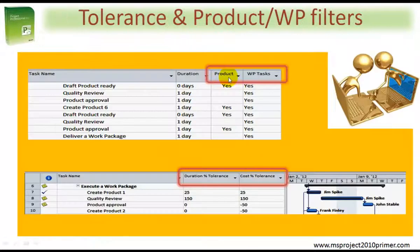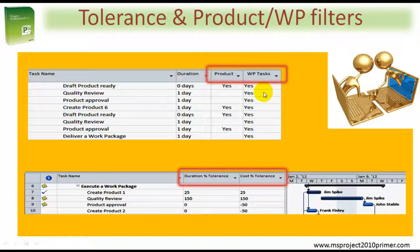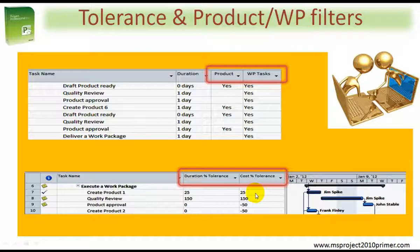I've also included important product and work package task filters, so that you can use these to help manage and control your PRINCE2 projects within Microsoft Project, as well as for reporting requirements. You get automatically calculated duration percentage tolerance and cost percentage tolerance, right down at task level, at work package level, at stage level and at project levels.